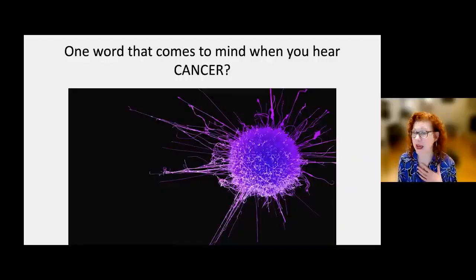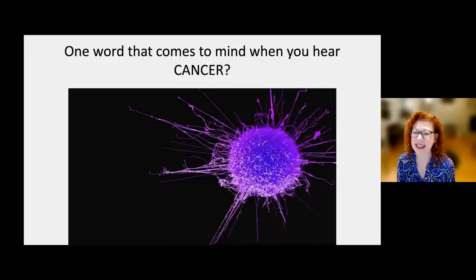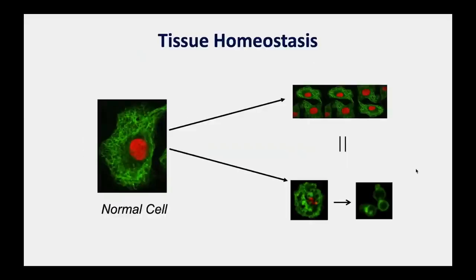From my perspective when I think about cancer, a common theme of all cancers is that they arise from uncontrolled cell proliferation. Our organs and tissues normally maintain what we call homeostasis, meaning they maintain the same number of cells by carefully regulating processes of cell proliferation and cell death.